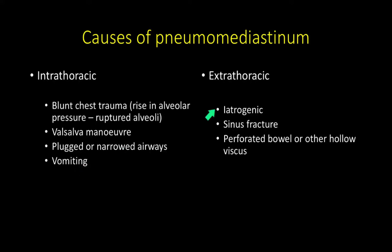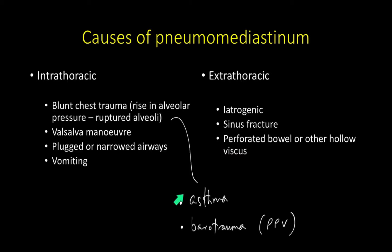Don't forget iatrogenic causes, fractures including sinus fractures, where there's a communication of gas into the fascial planes and the mediastinum, and retroperitoneal gas from perforated viscus below the diaphragm. Asthma and barotrauma from positive pressure ventilation are very important causes of raised intra-alveolar pressure leading to pneumomediastinum.